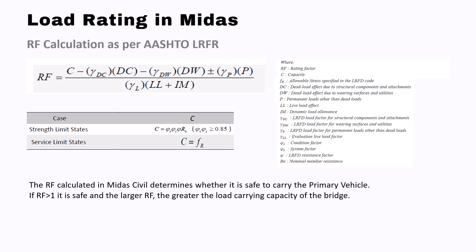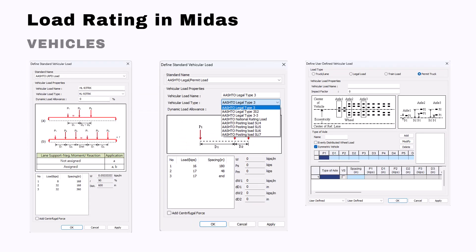For load rating in MIDAS, the rating factor is calculated as per AASHTO LRFR using the formula provided in the AASHTO LRFR code. The RF calculated in MIDAS determines whether it is safe to carry the primary vehicle. If RF is greater than 1, it is safe, and the larger the RF, the greater the load carrying capacity of the bridge. MIDAS Civil has a huge database of standard vehicles, for example HL-93, HL-93 Tandem, and other design vehicles. Apart from that, we have actual legal or permit loads for load rating. If you have any special vehicles like a military tank or a unique vehicle, you can create your own vehicles using the permit truck option.